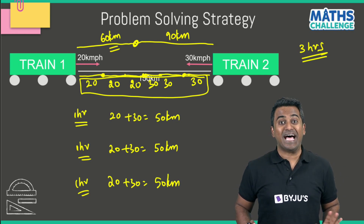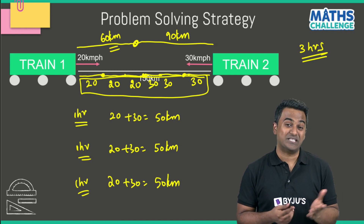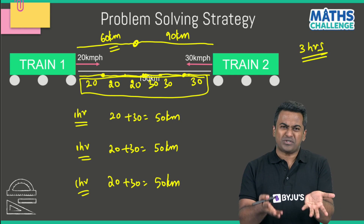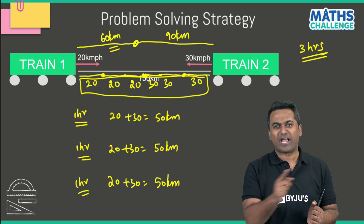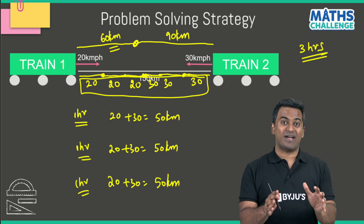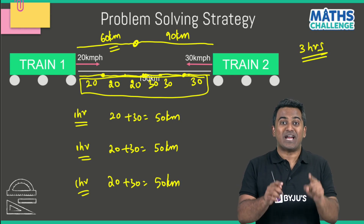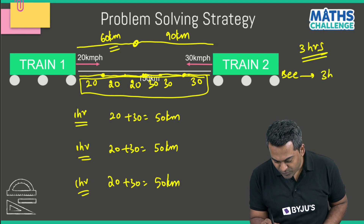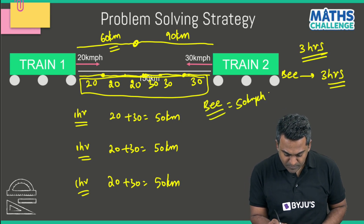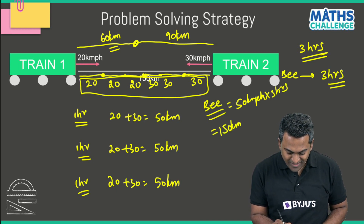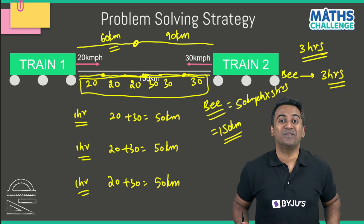Now bring the bumblebee back. The bee also traveled for three hours — back and forth, turning around, touching each train repeatedly. The speed of the bee is 50 kilometers per hour, and it traveled for three hours, so the distance traveled by the bee is 50 kilometers per hour multiplied by three hours, which gives 150 kilometers.